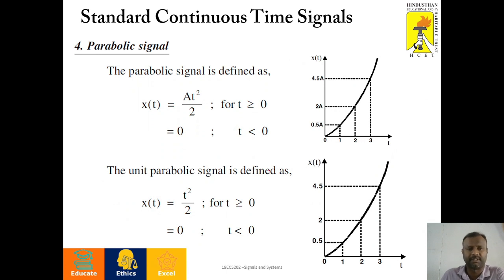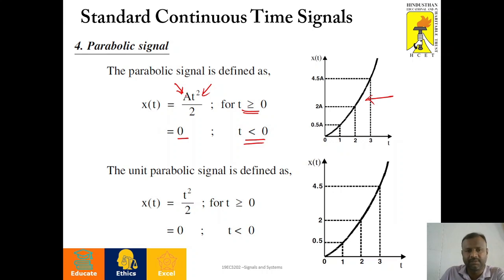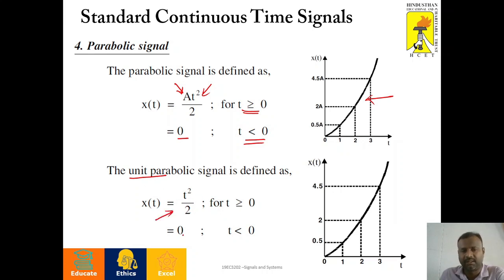Next is the parabolic signal. That is x of t equals A times t squared divided by 2 for t greater than or equal to zero, and it is zero for t less than zero. Here again, if A equals 1, then this kind of parabolic signal is called as unit parabolic signal. So, x of t equals t squared by 2 and x of t equals zero for different values of t. These are the graphical structures.